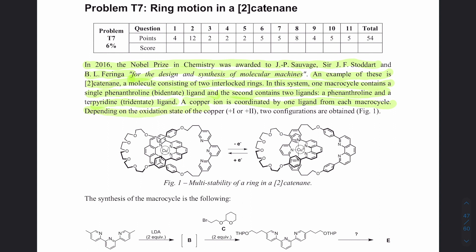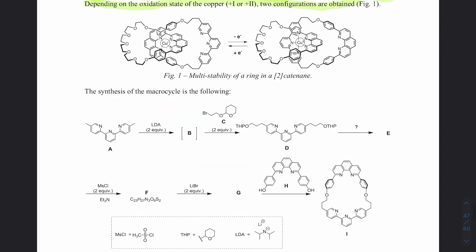A copper ion is coordinated by one ligand from each macrocycle. Depending on the oxidation state — copper(I) or copper(II) — two configurations are obtained. With copper(I), the bidentate part attaches; with copper(II), the tridentate ligand attaches. Basically, if you imagine this ring and rotate it, you get that configuration. The synthesis of the macrocycle follows.